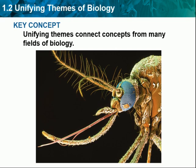Chapter 1, Section 2: Unifying Themes of Biology. Key Concept: Unifying themes connect concepts from many fields of biology. Main Ideas: All organisms share certain characteristics. All levels of life have systems of related parts. Structure and function are related in biology. Organisms must maintain homeostasis to survive in diverse environments. Evolution explains the unity and diversity of life.